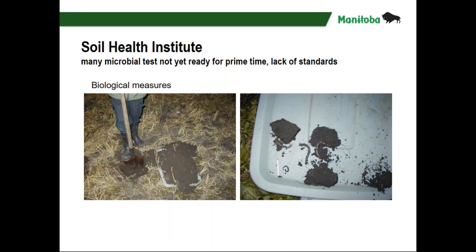John jokes he prefers counting worms, and Marla points out that even the commonly cited threshold of 10 earthworms per cubic foot of soil is a number without scientific basis — randomly adopted at some point. John notes that physical measures of soil health are more reliable and are where he and Marla feel more comfortable.